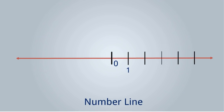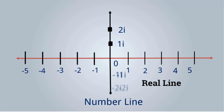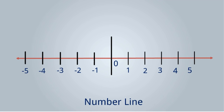We all know the number line. Zero is the origin; all right-hand numbers are positive like 1, 2, 3, 4, 5 and so on, and left side of zero is negative: minus 1, minus 2, minus 3, minus 4, minus 5 and so on. This is the real number line. There is also one vertical line — above the origin: 1i, 2i, 3i, 4i and so on, and below zero: minus 1i, minus 2i, minus 3i and so on. This vertical line is the imaginary line.